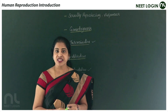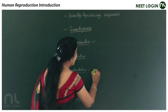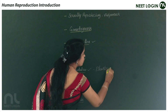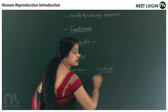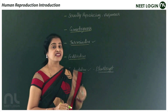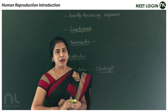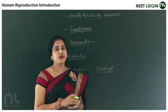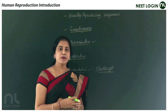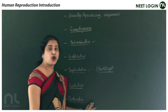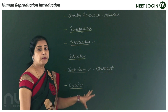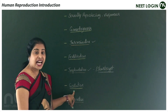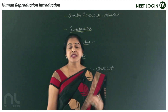After fertilization, the zygote develops into a stage called the blastocyst. The blastocyst stage is the stage of implantation in mammals, where the blastocyst attaches to the wall of the uterus. This attachment is called implantation.